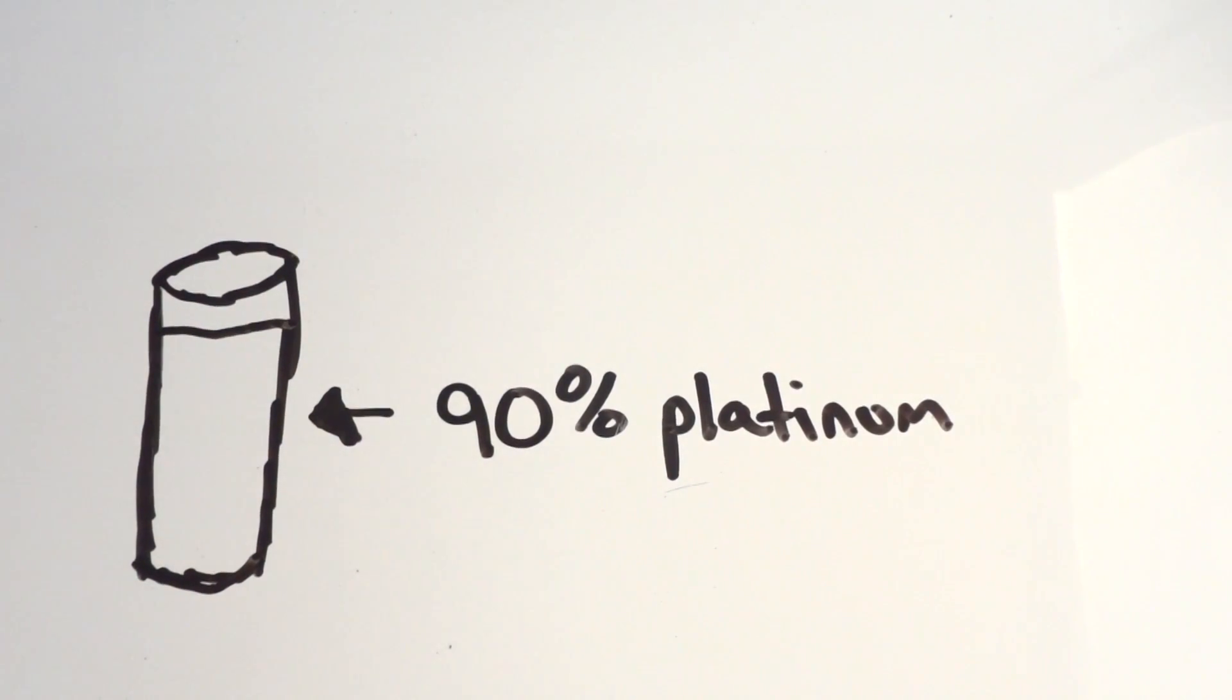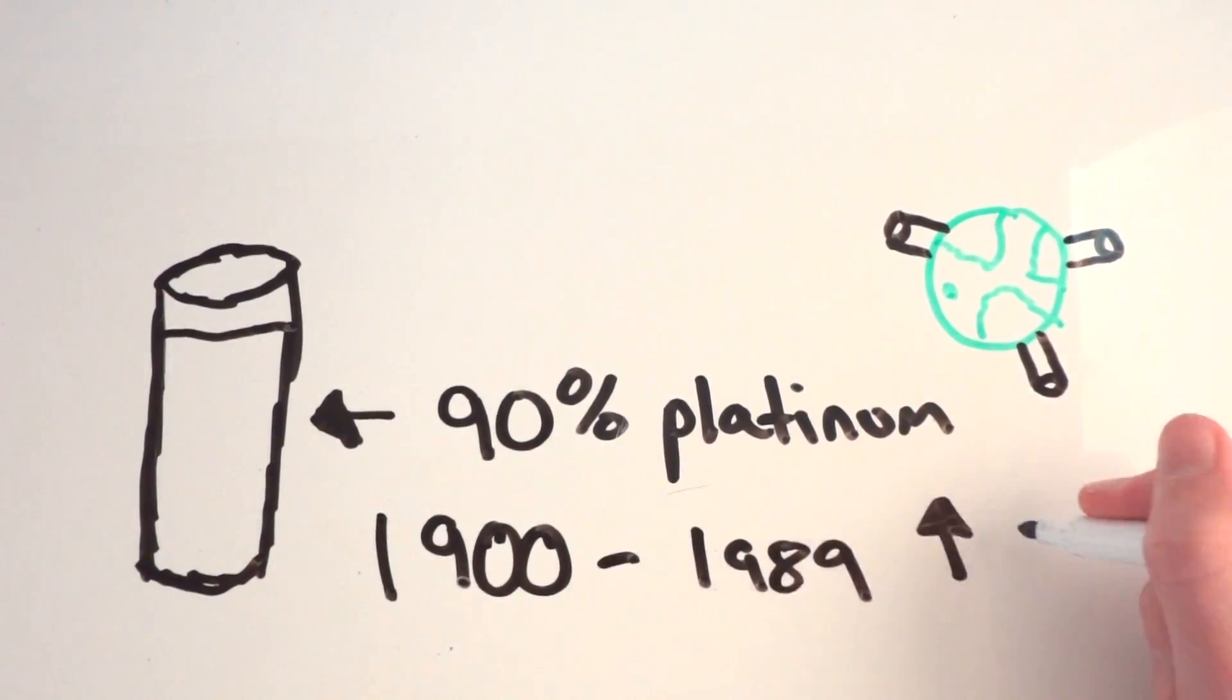There are many copies of this international prototype kilogram all around the world, in countries like Australia, France, Denmark, Kenya, South Africa, the United Kingdom and the United States, but none of these copies are the exact same weight as the international prototype kilogram.